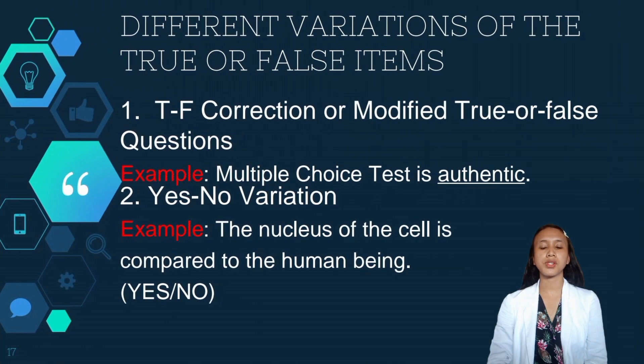Now, there are different variations of true or false items. First is T or F correction or modified true or false question. In this format, the statements are presented, and each statement contains a keyword or brief phrase that is underlined. It is not enough that a student correctly identify a statement as being false. To receive credit for a statement labeled false, the student must also supply the correct word or phrase which, when used to replace the underlined part of the statement, makes the statement a true one. Example, multiple choice test is authentic. The underlined word there is authentic, and the students will identify whether it is true or false. And if it is false, the student should supply the correct word or answer.